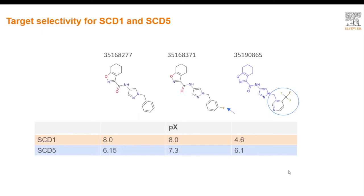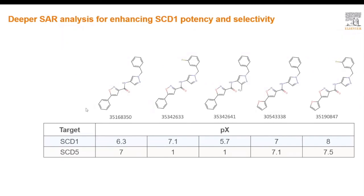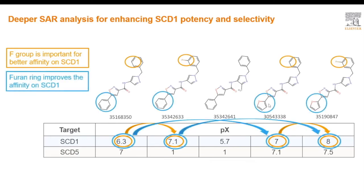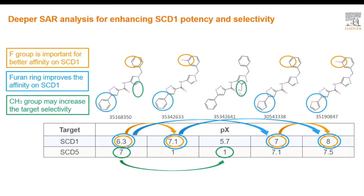Looking at a different scaffold, we see that addition of fluorine to the benzene ring at the end of the molecule results in increased activity against SCD1. Addition of a fluorine group to the other end of the molecule also results in increased activity against SCD1, while retaining some level of selectivity against SCD5. Addition of a methyl group off the pyrazole ring results in a dramatic increase in selectivity against SCD5 and a small decrease of potency against SCD1.